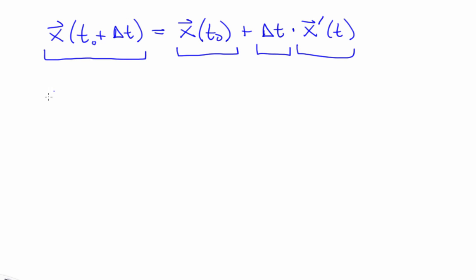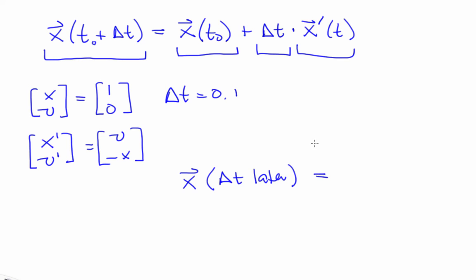Let's consider the initial condition, xv equals 1, 0. Just to remind you, the equations look like this. And we're going to use a time step of 0.1. And then we're going to plug in to figure out what x and v will be 0.1 seconds later. And we get this using the equation above.